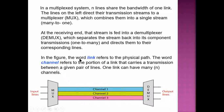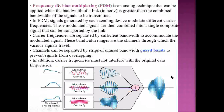The word 'link' refers to a physical path, while the word 'channel' refers to the portion of a link that carries the transmission between a given pair of lines. So one link can carry many channels. Now let's look at frequency division multiplexing (FDM), which is an analog technique.